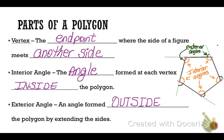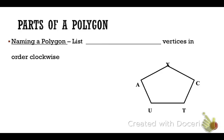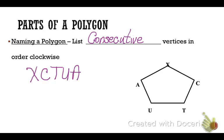Now let's talk about how you would name a polygon. You would list the consecutive vertices in order clockwise, and it does not matter where you start. So for this polygon, I could name it XCTUA, or I could name it UAXCT. As long as I'm going clockwise and listing them in consecutive order, I'm fine.